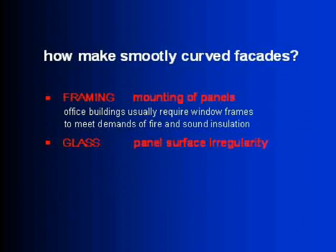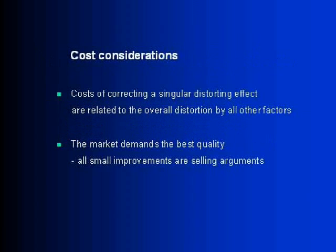The next thing is how to materialize such facades. It has parallel aspects like those of Mark Sobek. First of all, it's very important — there are many aspects that influence the regularity of a glass panel or of a facade, and it's no use spending lots of money on just one aspect if it hardly has any influence on all the others. However, the best quality should be demanded — not always, of course — but then it will be a selling argument.